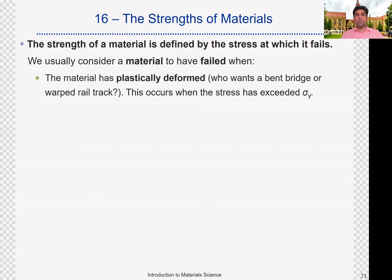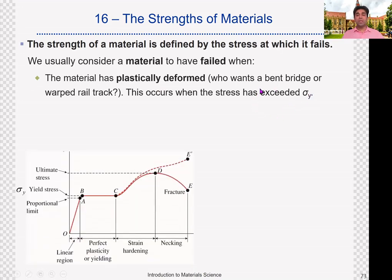We should have a way to recognize the failure of a material. We assume that most of the times when the material has plastically deformed, we assume that it has already failed and is not usable anymore. Therefore when some material has exceeded its yield stress sigma y, we assume that material has already failed. For most structural applications we want elastic response and we don't want any material to operate in the plastic region. After the yield stress, we assume that the material has failed.